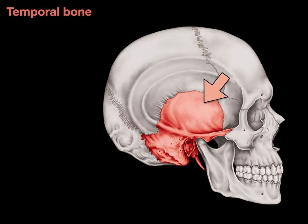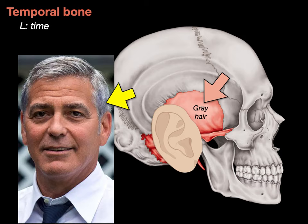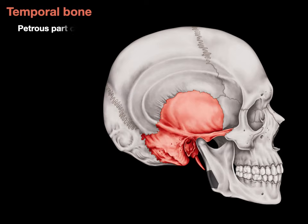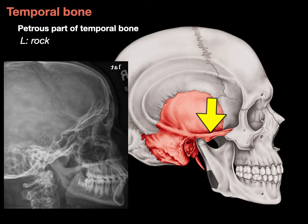The temporal bone is shown here in salmon color. Temporal is Latin for time, because that's the area where gray hair appears — gray hair comes with time, and that's where you usually start getting gray hair. The petrous part of the temporal bone is right there on the lateral side. The word petrous means rock, and it's best seen in a lateral X-ray as the most dense, bright, or white area of the X-ray — like a happy face for me; if I find that, it helps me find other structures.